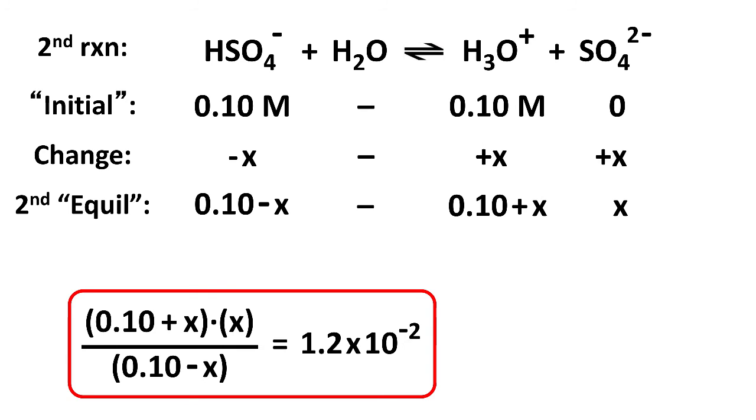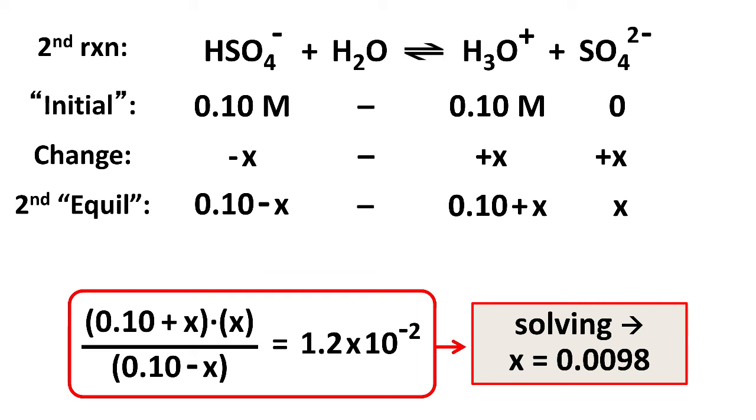So that's the equation we want to solve. Do the usual stuff to solve, and you get x equals 0.0098 molar. And now note, this time, x is not the hydronium ion concentration.